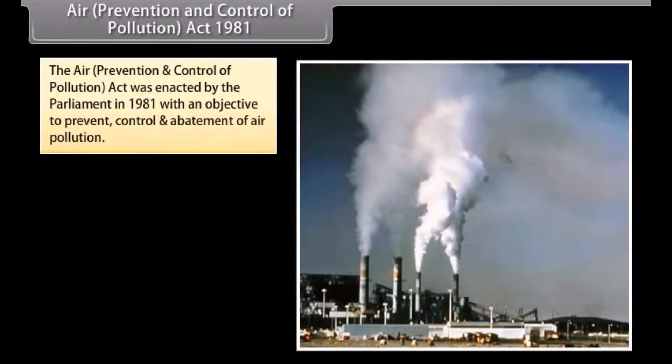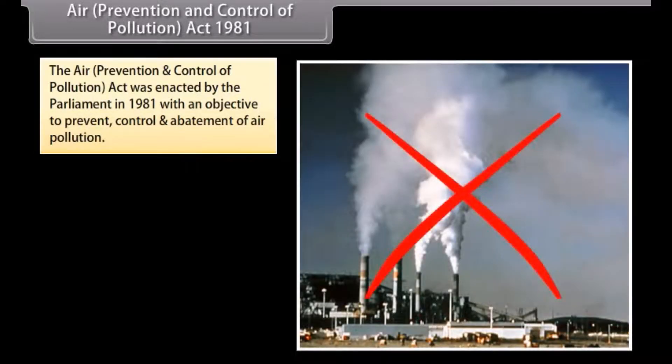The Air Prevention and Control of Pollution Act was enacted by the Parliament in 1981 with an objective to prevent, control and abatement of air pollution.